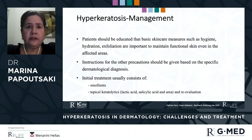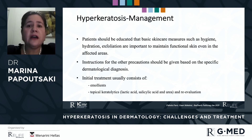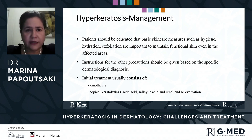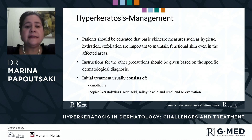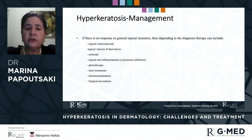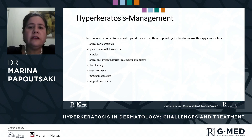Regarding the management of hyperkeratosis, patients should be educated that basic skin care measures such as hygiene, hydration, and exfoliation are important to maintain functional skin even in affected areas. Initial treatment usually consists of emollients and topical keratolytics such as salicylic acid or urea, and the patient is then re-evaluated. If there is no response to general topical measures, therapy can include topical corticosteroids, vitamin D derivatives, retinoids, topical anti-inflammatories like calcineurin inhibitors, phototherapy, laser treatments, immunomodulators, or even surgical procedures.